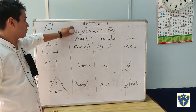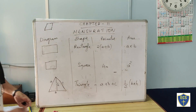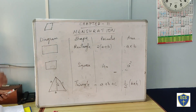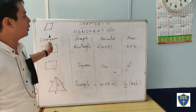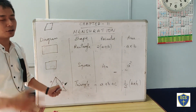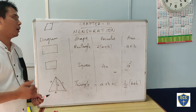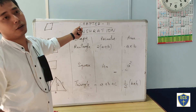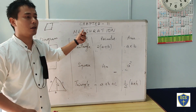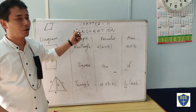This is the 11th chapter — Mensuration. We will cover: diagram, shape, perimeter, and area. We are going to look at this for class 9 and class 10. The entrance for class 8 is Mathematics 2, which is the first subject in school.